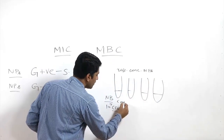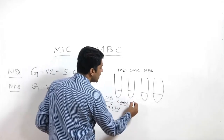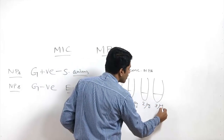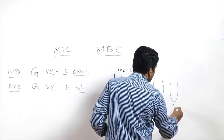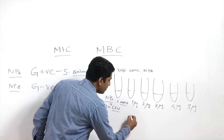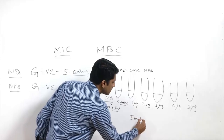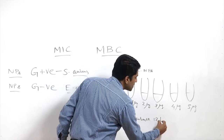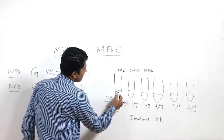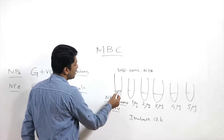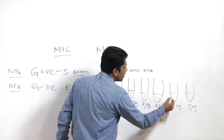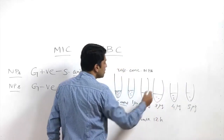The first one is your control, where there is no nanoparticle. For example, you are adding 1 microgram, 2 microgram, 3 microgram, 4 and 5 microgram. After that, you will be incubating for 12 hours, that is overnight incubation. After incubating, you will see complete turbidity in the control where there is no nanoparticle, and you will be able to see that the turbidity going down with respect to concentration.